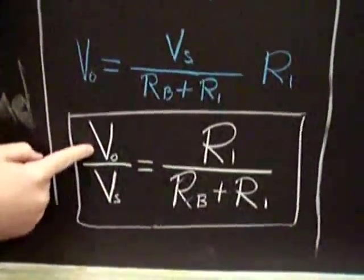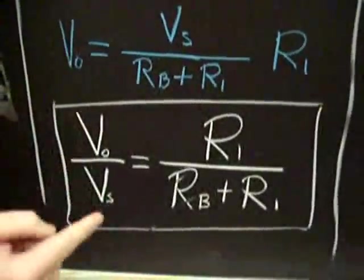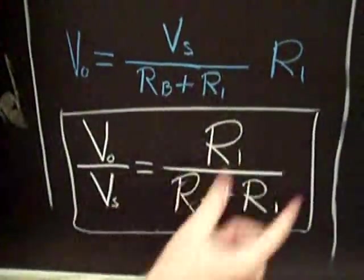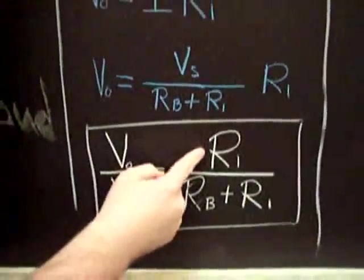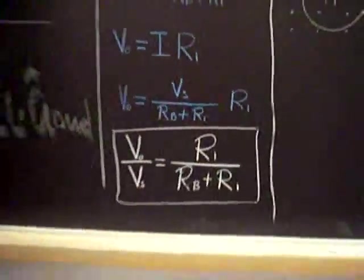The ratio of the voltage of the solenoid divided by the voltage of the source should equal the ratio of these resistances. The resistance of the solenoid divided by the series sum of the resistance of the base and the solenoid. Let's get started.